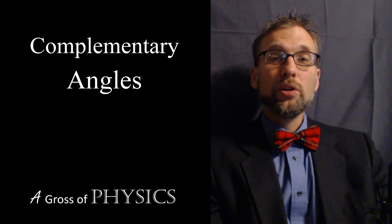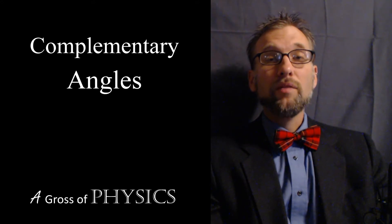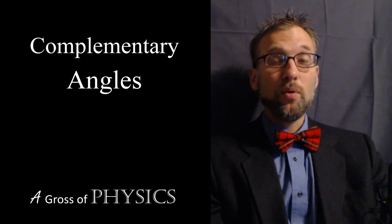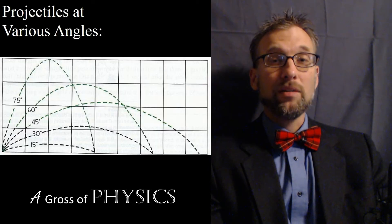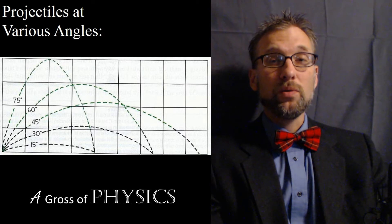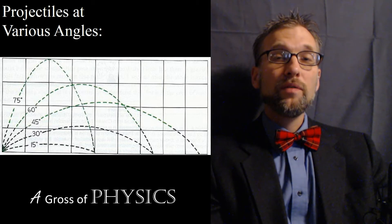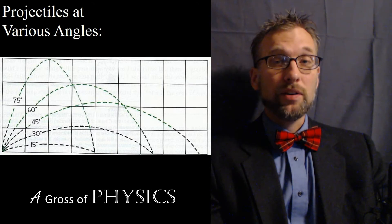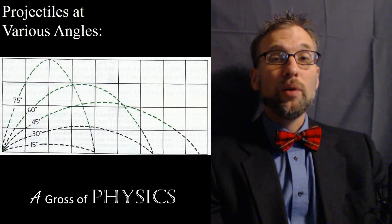In this case, I want to show you a chart of different projectiles being launched with the same initial velocity from the same point, all at different angles. And what we're going to do is analyze how this chart can be used. It shows a number of different dotted line paths, parabolic in nature, of projectiles going through the air.